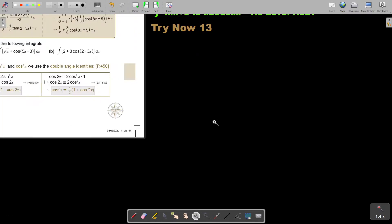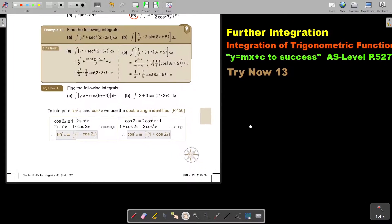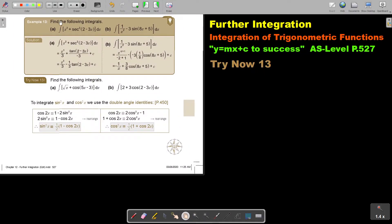Let's look at another example. I'm just making it a bit bigger. Find the following integral: x squared plus cos squared 2 minus 3x dx.